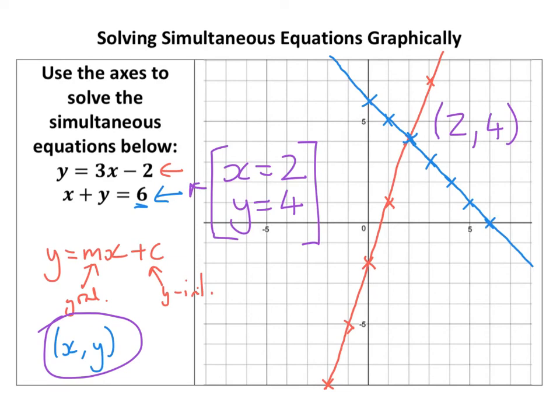That's essentially how you do it: plot the lines, see where they cross, there are the solutions. They won't always be as nice as 2 and 4 — you might have one and a half, or negatives, fractions, whatever. But that's essentially how they all work.